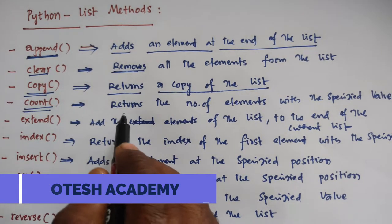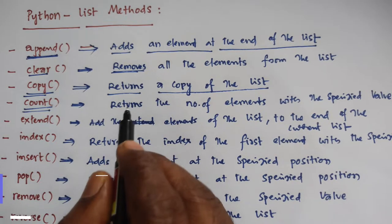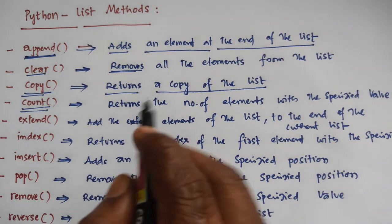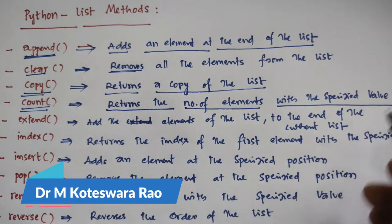Next, count. This is used to determine how many elements are available with a particular specified value. That is, it returns the number of elements with the specified value.